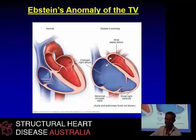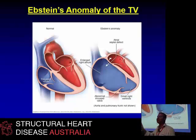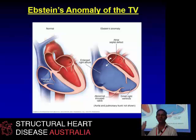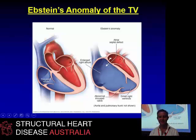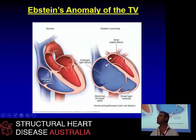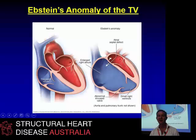Epstein's Anomaly — the best disease. Everything you need to know about Epstein's Anomaly is on this slide. This is what it is: the leaflets are displaced apically, and they're horribly dysplastic, and they can be tethered, and they can be leaky, and they can be stenosed.